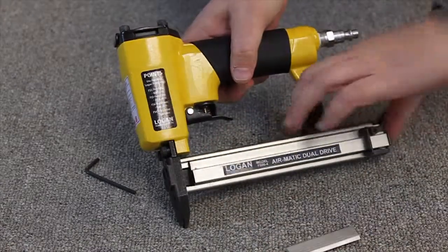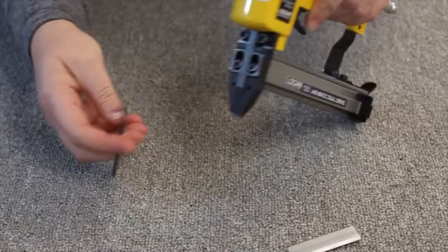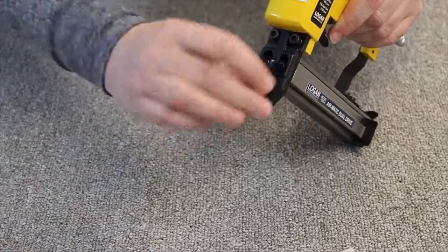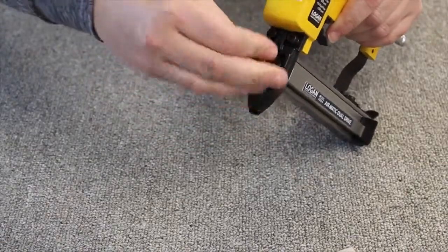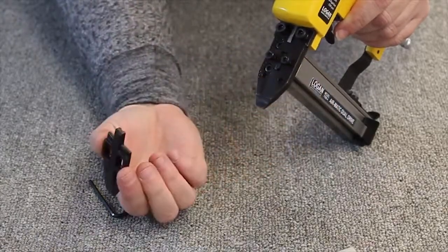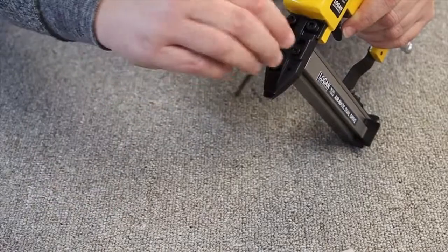remove any point strips. Use the proper allen wrench to loosen and remove the nose piece, clearing the jam. Then replace the nose piece and retighten the screws.